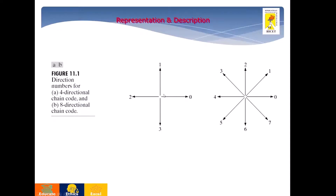For example, in a 4-directional chain code, if the direction of the line segment is to the right it is 0, top is 1, left is 2, and the remaining side is 3. The diagonal directions are left out in 4-directional code. If it is 8-directional code, diagonal directions are also considered, and based on those diagonal directions, the numbering is provided.